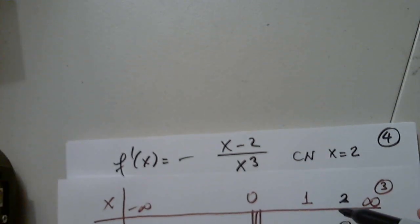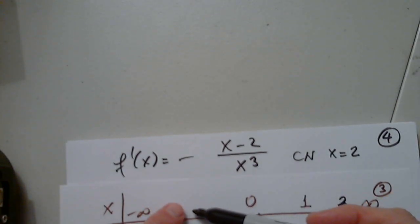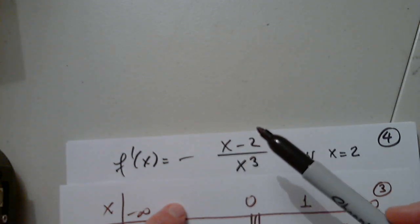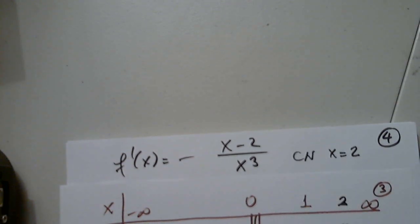So I have to study the sign. To the left of 0, this is negative. I have to plug in a number. So negative 10. Negative 10 with minus 2 is negative with minus in front is positive, but the denominator is negative.